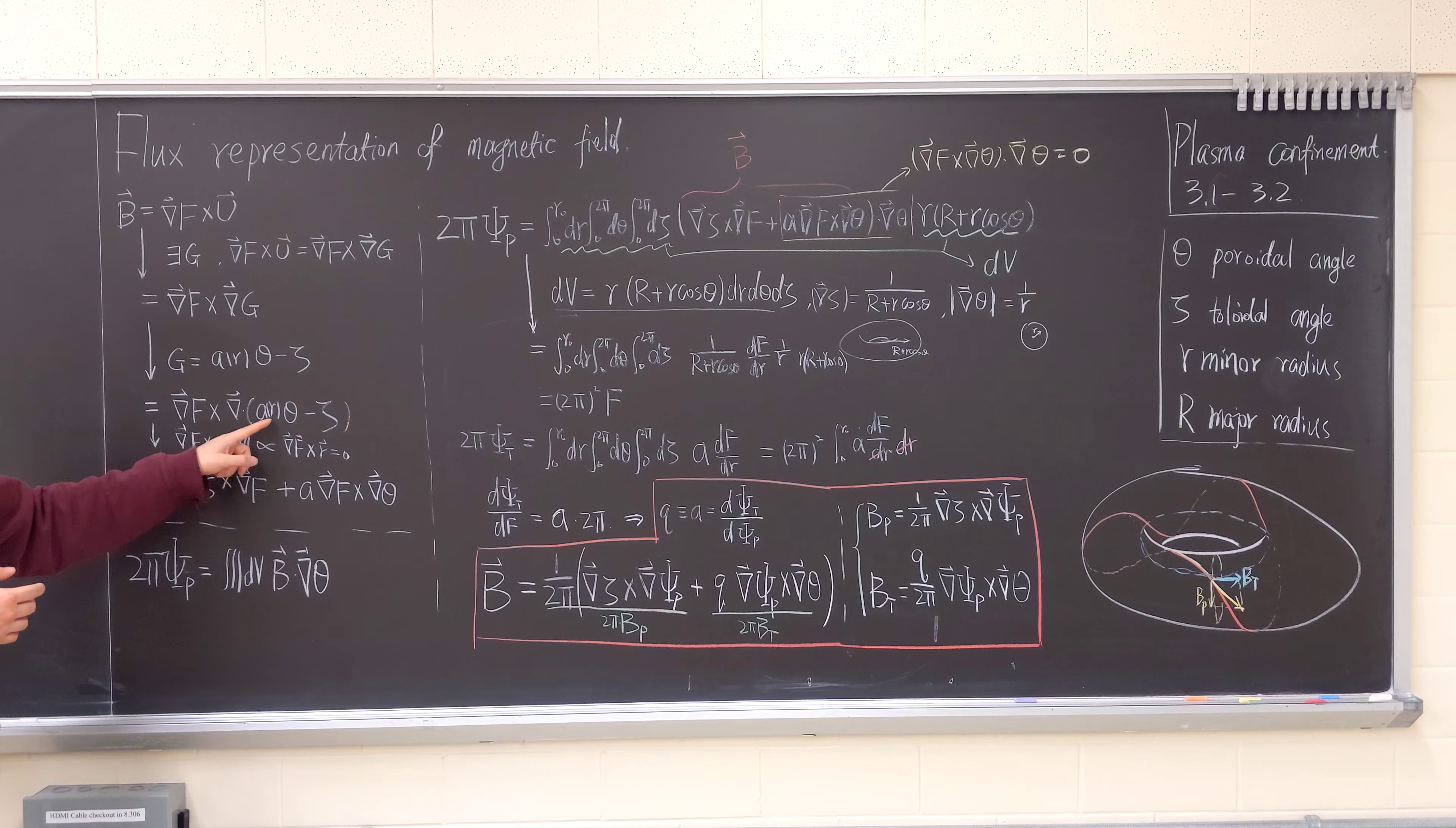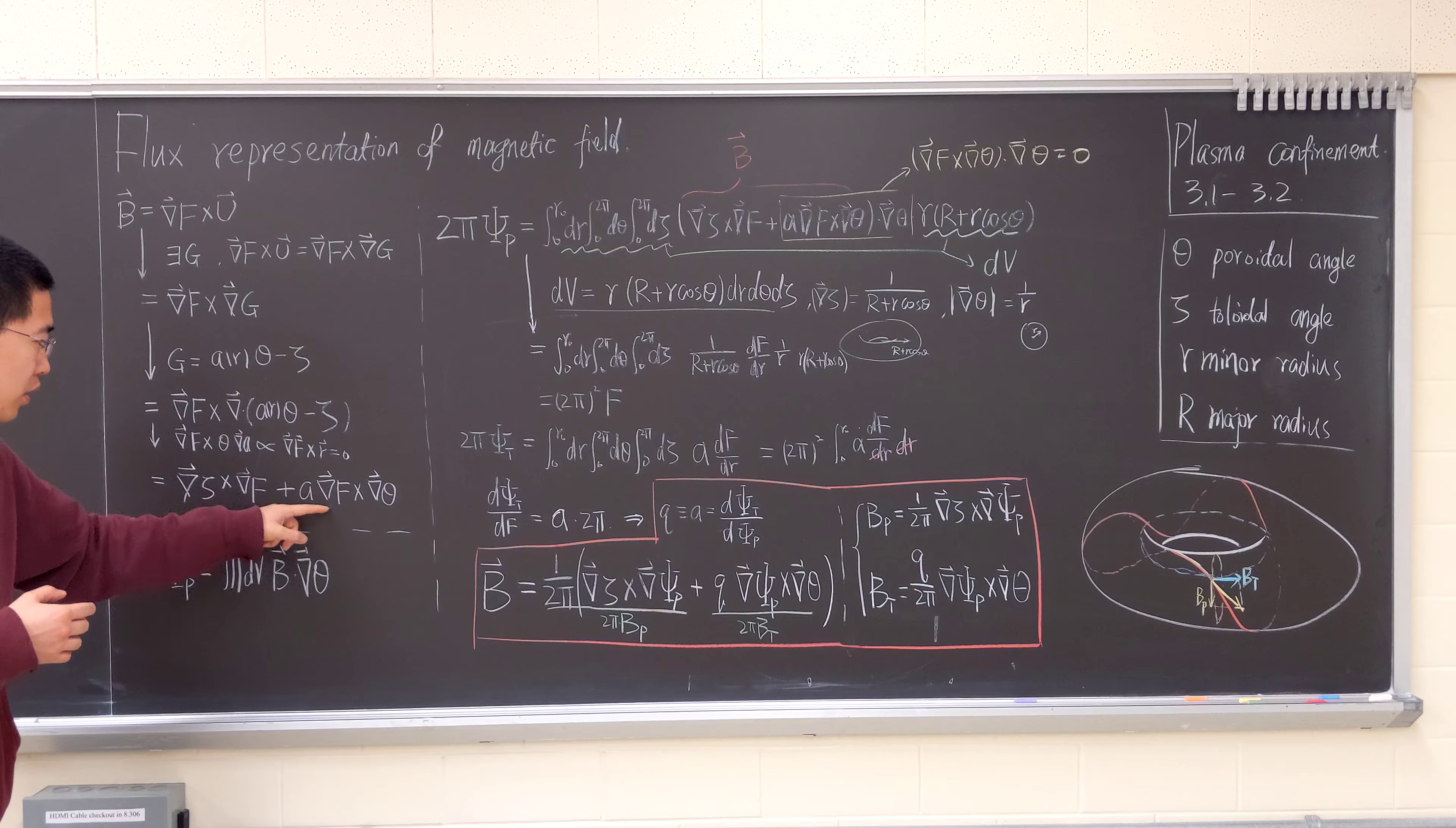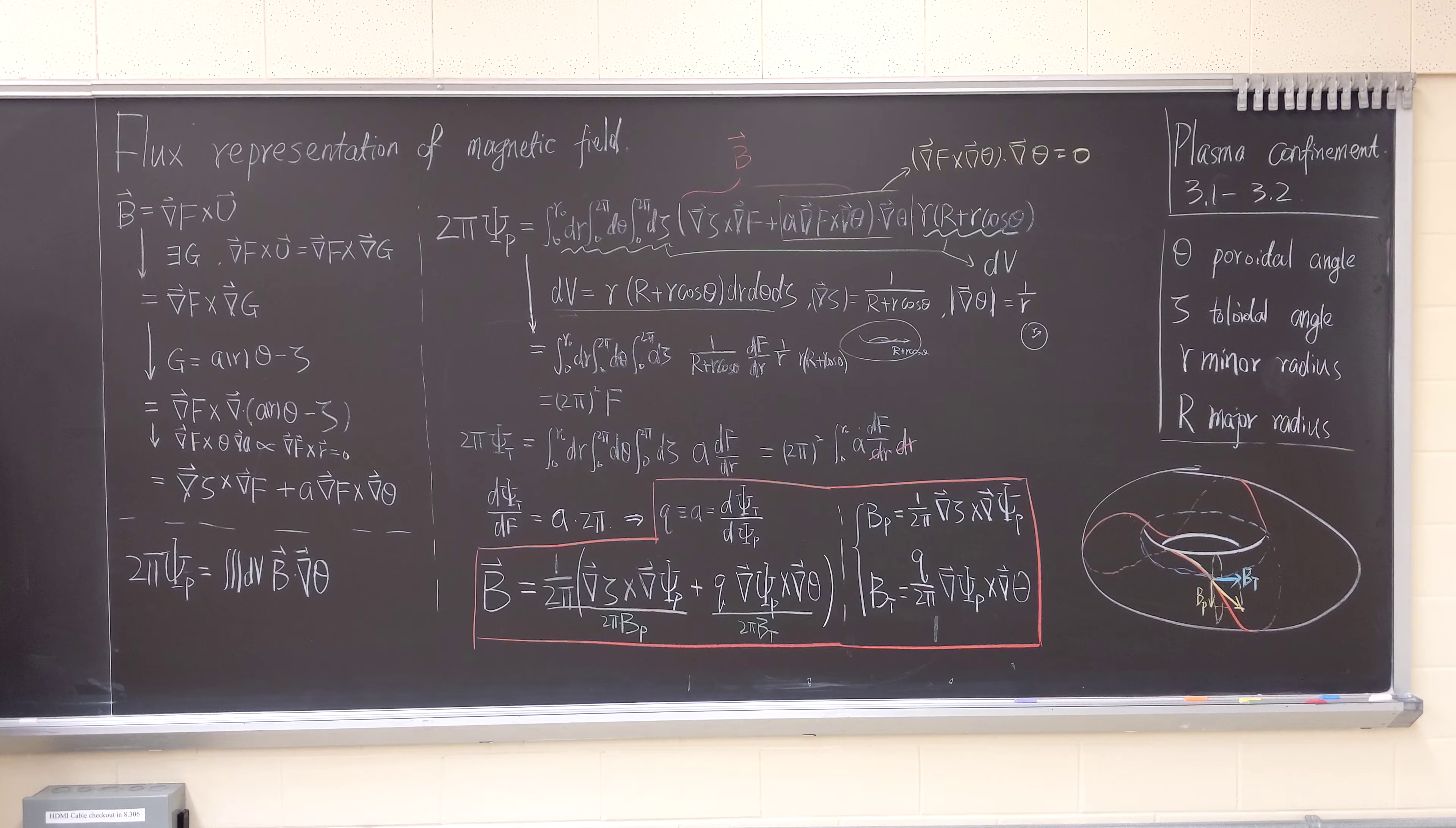Because gradient of this and gradient of that, gradient of A will go to zero. So we're only left with A grad F cross grad theta. Let's summarize, this is the general form of a magnetic field.